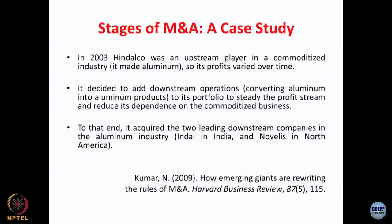We will try to understand these processes by one case study. In 2003, Hindalco was an upstream player in a commoditized industry. It made aluminum, so its profit varied over time. In a commodity market, price fluctuation happens much faster and that fluctuation has an adverse impact on forecasting and the profitability of these organizations.